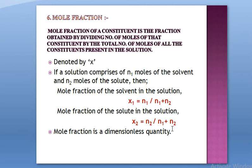Generally we have binary solutions, but it is very much possible to have more than two components. In that case, the total number of moles in the denominator becomes n1 + n2 + n3 + n4 + n5, up to any limit. And in the numerator, you place the moles of whichever component's mole fraction you want to calculate.